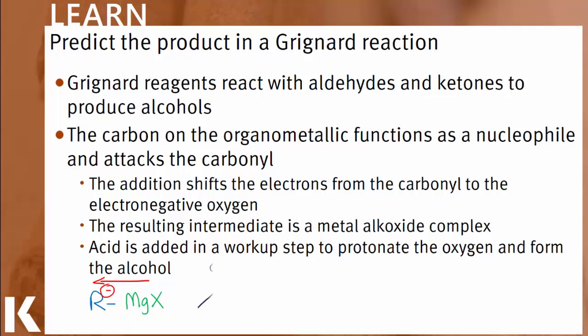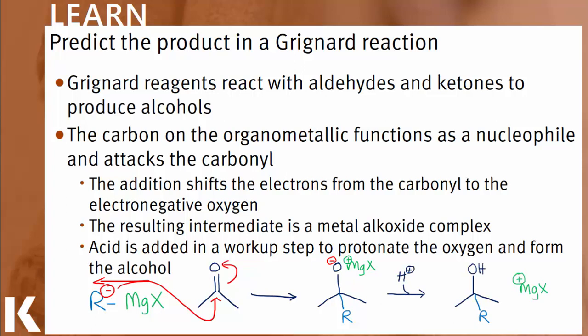Specifically, the nucleophilic carbon in a Grignard will attack the electrophilic carbon in a carbonyl of aldehydes and ketones to form a new carbon-carbon bond, reducing the double bond to oxygen to a single bond to form a metal alkoxide complex. An acid workup then displaces the metal to form an alcohol.